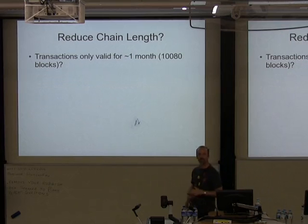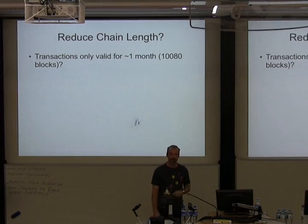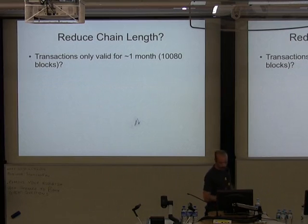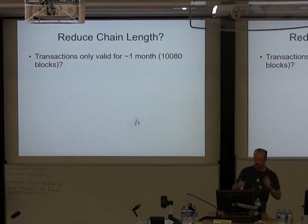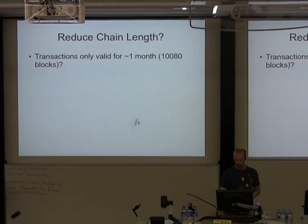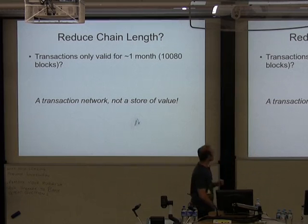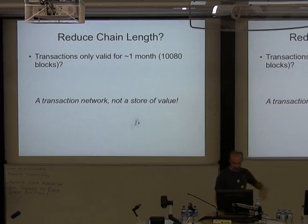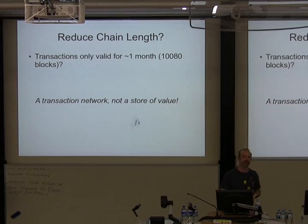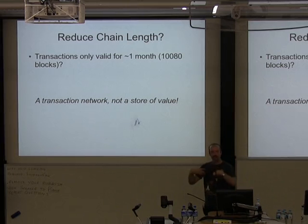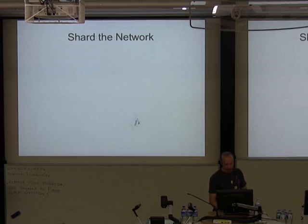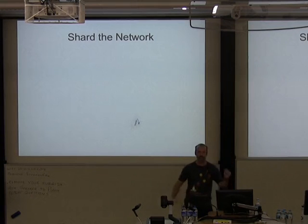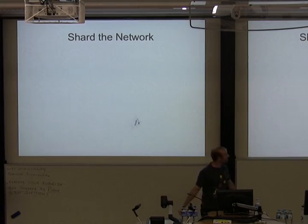People have suggested reducing the chain length — basically go: if it's too old, you're out. It turns out this doesn't actually help very much, but because I emphasise that Bitcoin is a transaction network not a store of value, I like this idea, so we'll probably do it — just throw away old stuff. But that doesn't help you with the amount of bandwidth you've got to suck up to keep up. It just means you don't have to read all the backlog. So the obvious thing — anyone at Google will tell you — the way to scale is to shard everything. Let's shard the network.